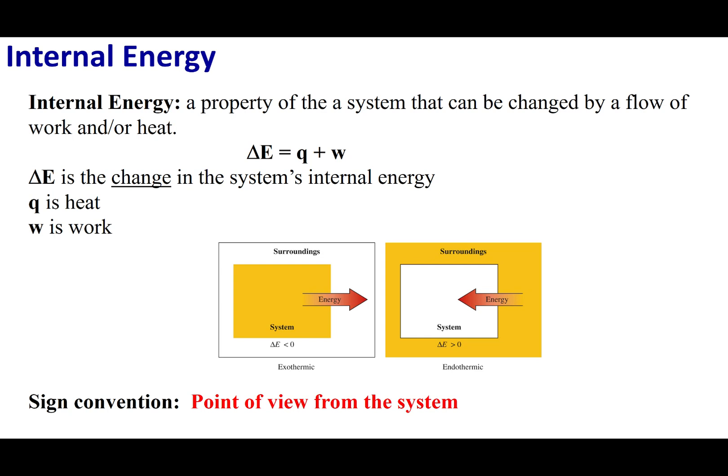Now let's talk about the change in internal energy. I'm going to use ΔE to represent the change in internal energy. The change in internal energy is going to be Q plus W, where Q stands for heat and W stands for work. Internal energy is the energy inside the system that is changed by either doing work or if heat is exchanged with its surroundings. I use a capital E for internal energy because internal energy is a state function — things that are state functions use a capital letter. Q and W are not capitalized because heat and work are not state functions.